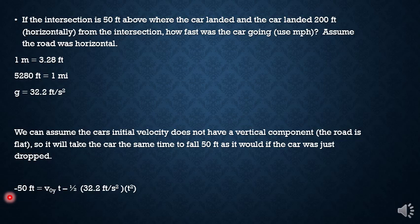Looking at that, I can say that negative 50 feet equals V sub zero Y times T. And this is going to equal to zero because I just said the vertical component of the initial velocity was zero, just like it was dropped. If there was a ramp or the road was tilted, then I would need to include an initial Y component of the velocity. But in this case, it equals to zero.